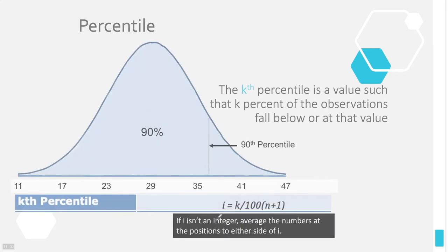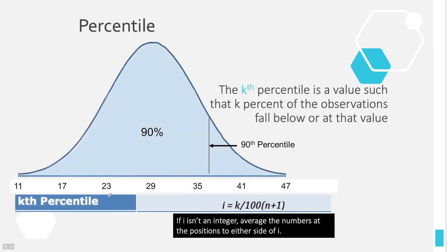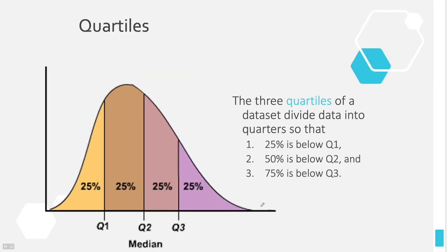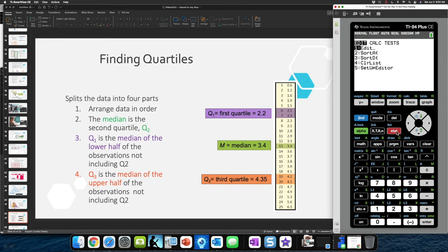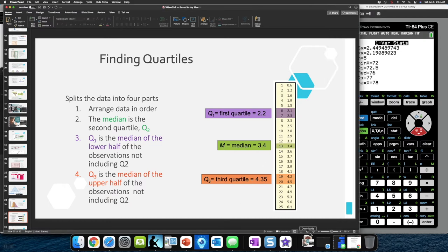The index formula is on your formula card — I took this straight from the formula card. If I isn't an integer, remember to average the two data values around the Ith position. But better yet, use your calculator: go to STAT, CALC, 1-Var Stats, Calculate, and scroll to the bottom. You'll see Q1, Q2, and Q3 listed there. Three different ways to compute quartiles — I would use the calculator most of the time.